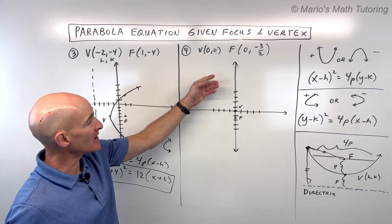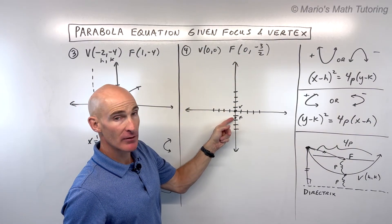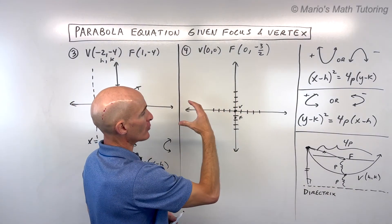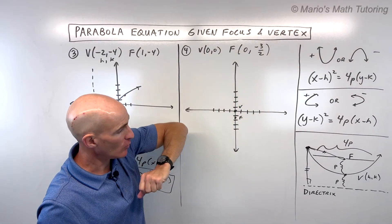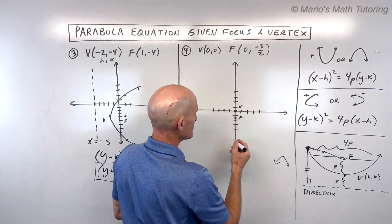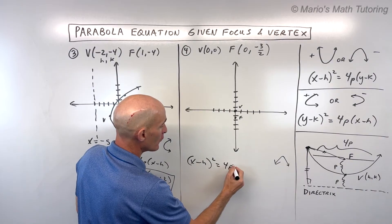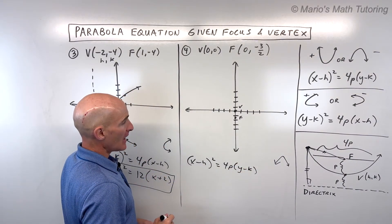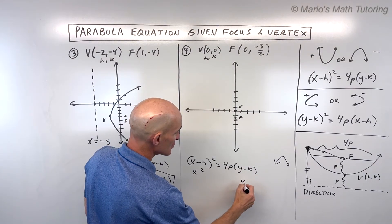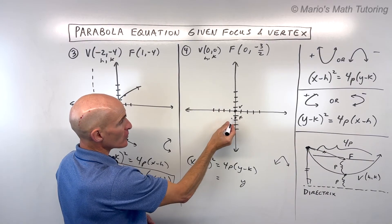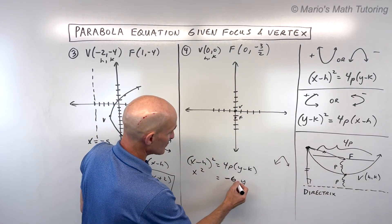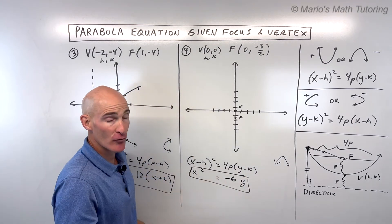For number 4, the vertex is at the origin (0, 0) and the focus is at (0, -3/2), or negative 1 and a half. The parabola opens towards the focus, so it opens downward. When it opens up or down, it's an x-squared type: x minus h squared equals 4p times y minus k. With vertex at the origin, x minus 0 squared is just x squared, and y minus 0 is just y. P is the distance from vertex to focus, which is 3/2. So 4 times 3/2 is 6, but since it opens down, it's negative 6. That's the standard form of the equation.